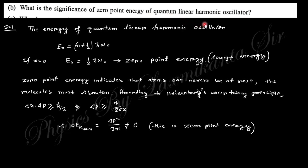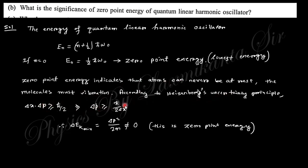Next, what is the significance of the zero point energy of the quantum linear harmonic oscillator? This is the energy of the nth state. For zero point energy, put n=0 — this is not equal to zero, and is called zero point energy, the lowest energy. This indicates the molecule must always vibrate. According to Heisenberg's uncertainty principle, this minimum energy is greater than zero, satisfying the principle.